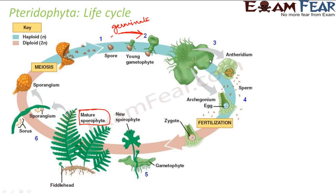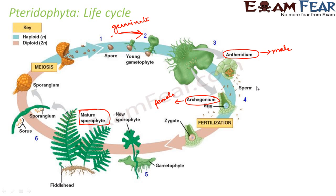This is the young gametophyte, and this is a slightly matured gametophyte. The gametophyte is the structure which produces the gametes. When it matures, it produces male and female gametes. This portion is the antheridium — the male gametophyte — and this portion is the archegonium — the female gametophyte. The male produces sperms and the female produces eggs.